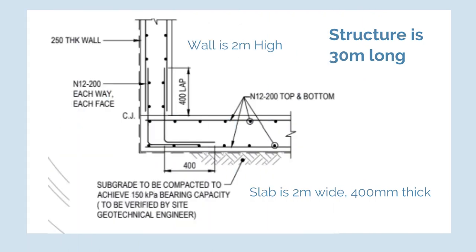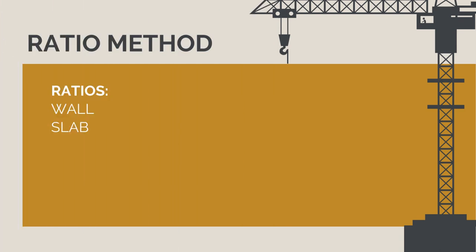We'll do an example using both these methods for the same wall we looked at to calculate the formwork quantities. Using the ratio method, we first need to choose the ratios we need. You can get these from the guidebook I've attached to the course notes. These are some general, broad figures for typical reinforced concrete elements. For walls, we'll use 100 kilograms per cubic meter, and for slabs, we'll use 125 kilograms per cubic meter.